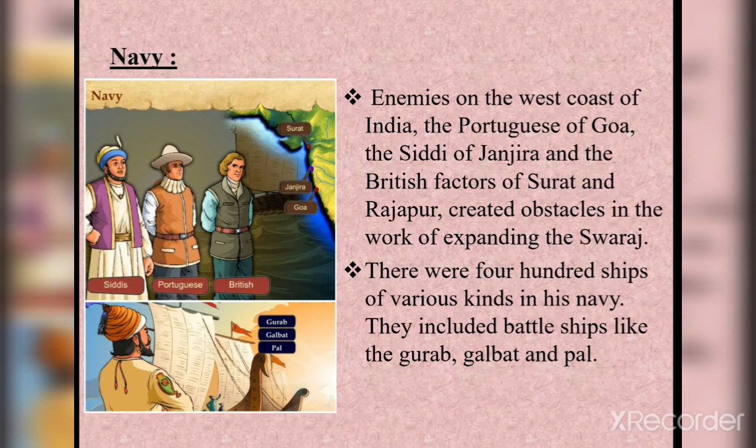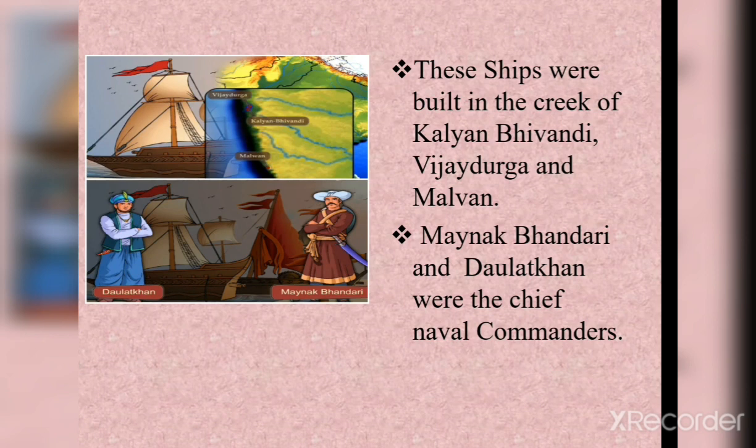Navy: enemies had started entering India on the west coast — the Portuguese of Goa, the Siddhi of Janjira, and the British factors of Surat and Rajapuri created obstacles in expanding the Swaraj. So Maharaj raised a navy, realizing that the one who has a navy can control the sea. There were 400 ships of various kinds in his navy, including battleships like the Gurab, Galbat, and Pal. These ships were built in the creeks of Kalyan, Bhivandi, Vijaydurga and Malvan. Maharaj appointed chief naval commanders Mainak Bhandari and Daulat Khan to look after the navy.